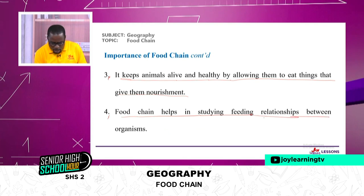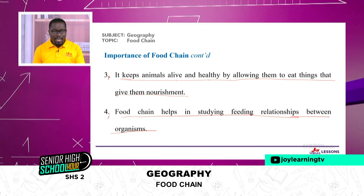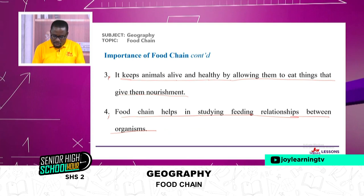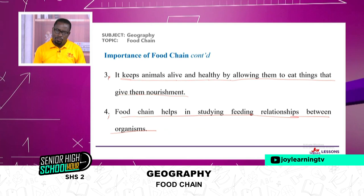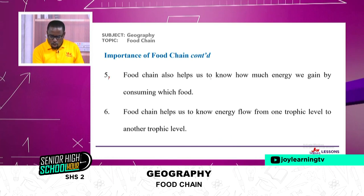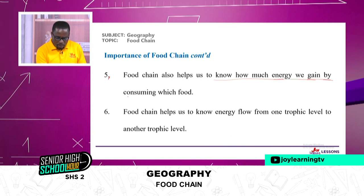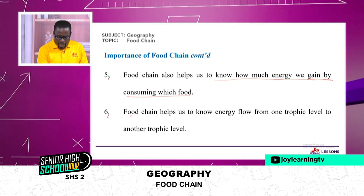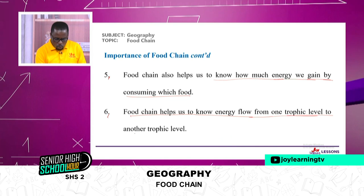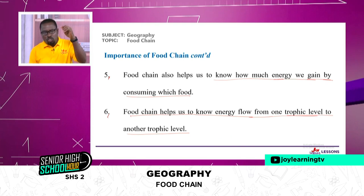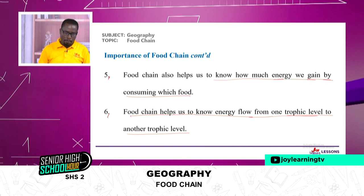Point four: food chain helps in studying feeding relationships between organisms. It is the food chain that gives us the idea of which organism feeds on which. Point five: food chain also helps us to know how much energy we gain by consuming food. Six: food chain helps us to know energy flow from one trophic level to another trophic level — the position that an organism occupies in the food chain.